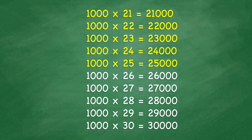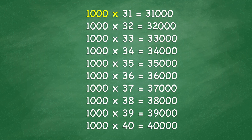1,000 times 25 equals 25,000. 1,000 times 26 equals 26,000. 1,000 times 27 equals 27,000. 1,000 times 28 equals 28,000. 1,000 times 29 equals 29,000. 1,000 times 30 equals 30,000. 1,000 times 31 equals 31,000. 1,000 times 32 equals 32,000.